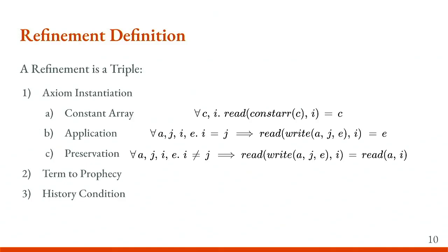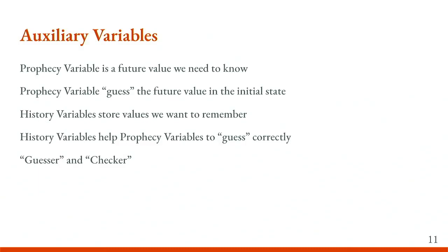A prophecy variable is basically a guess about a future value, made in the initial state. It can take any value in the initial state and maintains that value throughout program execution. A history variable stores values that we want to remember. History variables help prophecy variables guess correctly — we condition the property on the prophecy variable and history variables being equal. The prophecy variable is the guesser, and the history variable is the checker that makes sure the guess is correct.